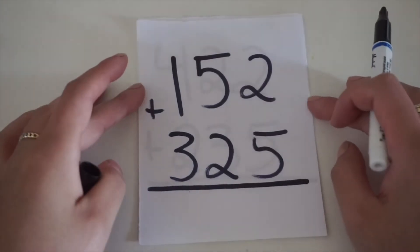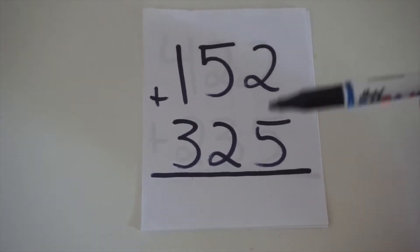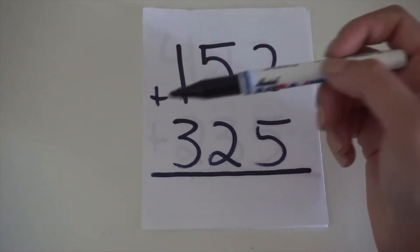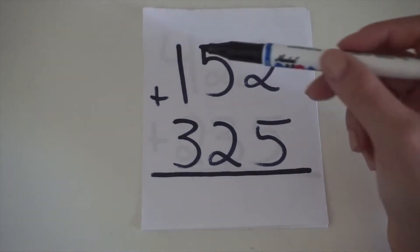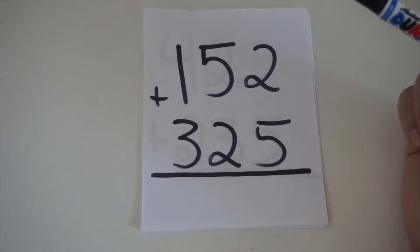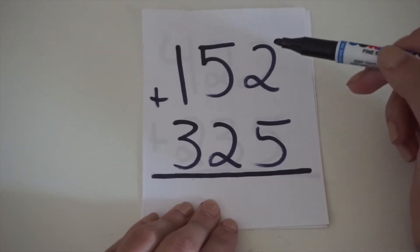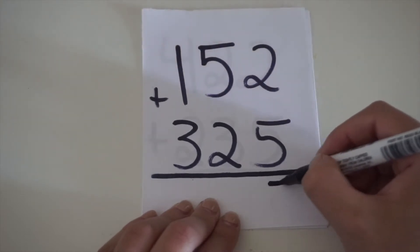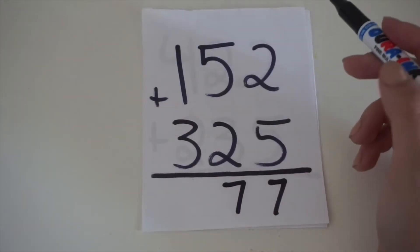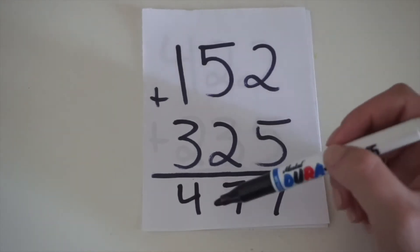For our fourth equation, we have a little bit of mix of numbers here. We are working with 152 plus 325. Again, we are going to go from up to down, right to left. The reason why we work from right to left is because if you have a bigger number on the left side, you are going to have to add that remaining number to the next one. I'll show an example of that in a bit. But for right now, they are really simple. So, we are just going to work from up to down. 2 plus 5 equals 7, 5 plus 2 equals 7, and 3 plus 1 equals 4. So, 152 plus 325 equals 477.